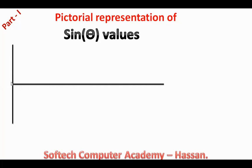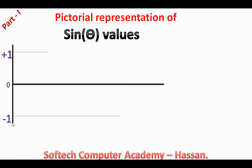This point is zero magnitude. If we draw a vertical line and a horizontal line, we have positive 1. If we draw a vertical line that is negative, it is negative 1. This is the horizontal line.